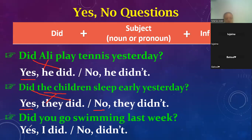The last example: 'Did you go swimming last week?' Answer: yes, you turns to I — yes, I did. Or no, I didn't.